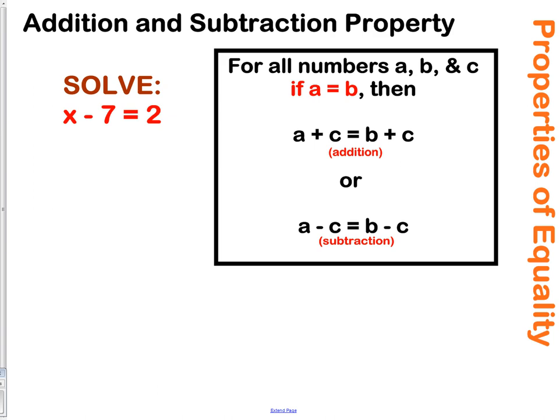The addition and subtraction properties tell us, for all numbers A, B, and C, if A equals B, then A plus C equals B plus C. Also, in the subtraction property, A minus C equals B minus C. You use this all the time when solving algebraic equations. In order to solve x minus 7 equals 2, we use the addition property to add 7 to both sides, getting x equals 9.